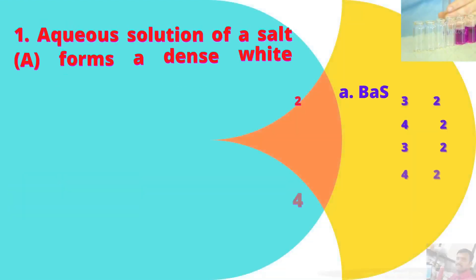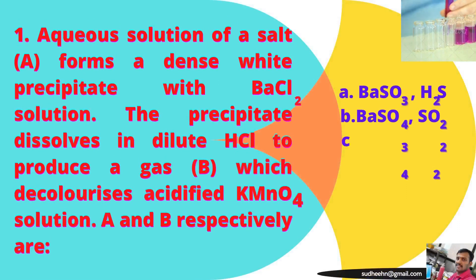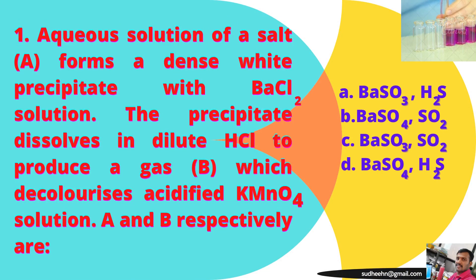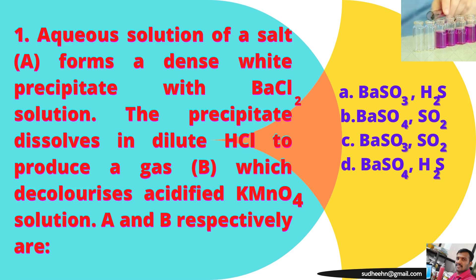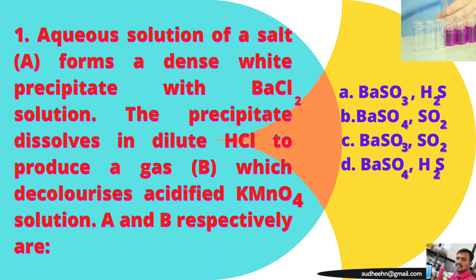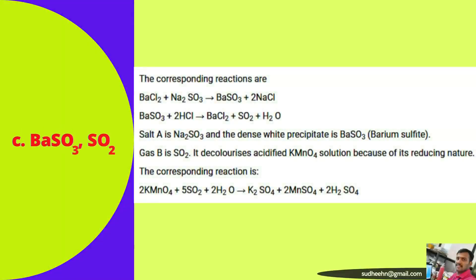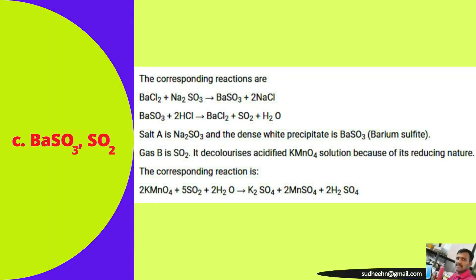Question one: an aqueous solution of a salt forms a dense white precipitate with barium chloride solution. The precipitate dissolves in dilute hydrochloric acid to produce a gas which decolorizes acidified KMnO4, that is potassium permanganate solution. A and B respectively are: option C is the right answer — barium sulfite and sulfur dioxide.